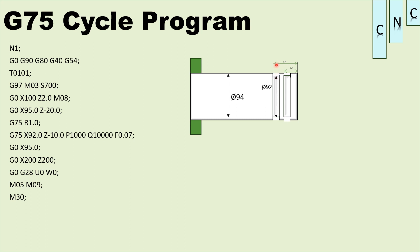X200, Z200 is the safe position — home position. M05 spindle stop, M09 coolant off, M30 end of program. That's the simple G75 cyclic program.